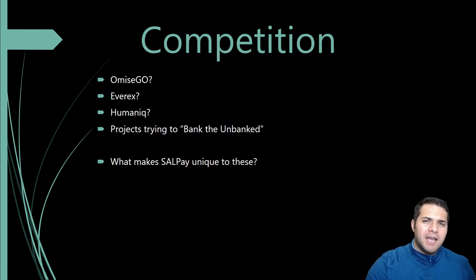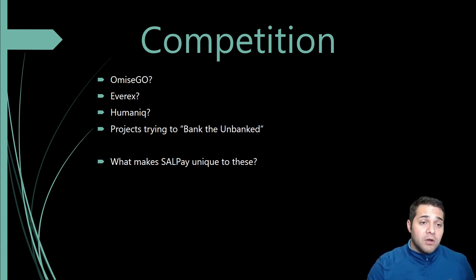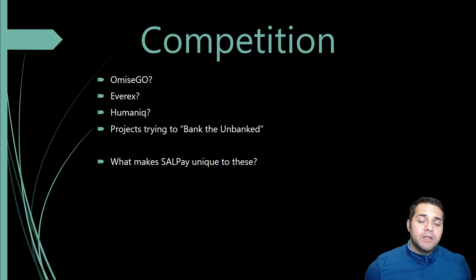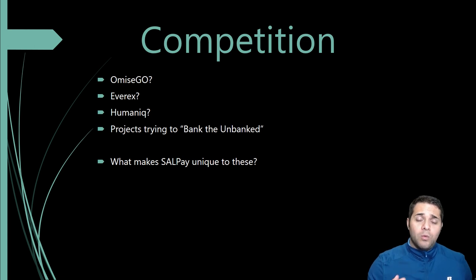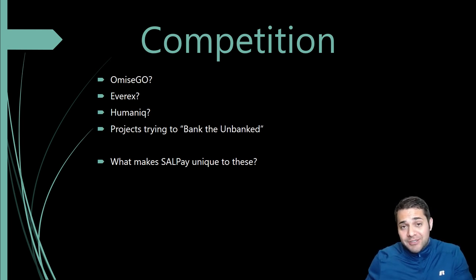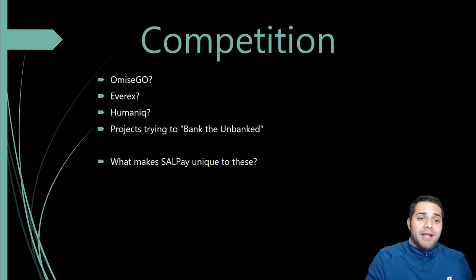For competition, this is kind of unique — their projects are trying to bank the unbanked. I picked Omicigo, Averix, and Humanicue. What makes Salpay different? All of those companies are B2C — business to consumer — relying on getting the consumer to adopt their platform and token. With Salpay, they're B2B2C — business to business to consumer — meaning they rely on a business coming on board and then getting the user on board through the company, basically forcing the consumer to use the wallet and platform, which in my opinion is a huge advantage.